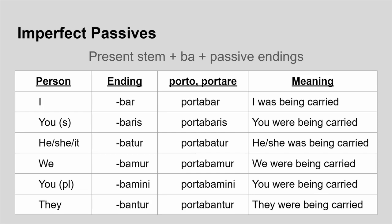Now, like in the present passive, you do not need that 'being' word — I just find it helps people to remember that it's a passive. So 'I was being carried' — you can just say 'I was carried,' 'you were carried.' I've still got the imperfect meaning; I've still got the 'was' that I expect from an imperfect, but I add the word 'being' to remind myself that it's passive.